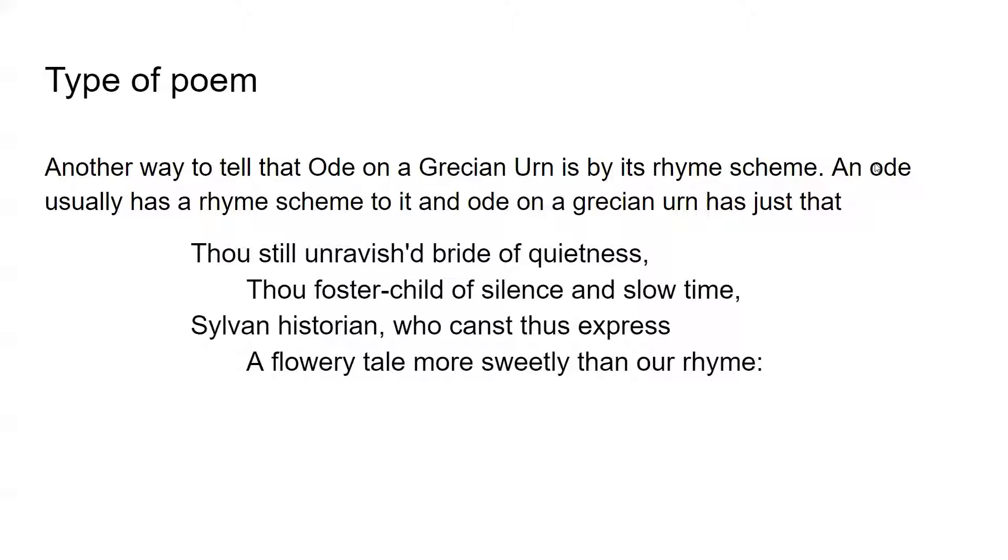Another way to tell that Ode on a Grecian urn is by its rhyme scheme. An ode usually has a rhyme scheme to it, and Ode on a Grecian urn has just that. For example, thou still unravished bride of quietness, thou foster child of silence and slow time, sylvan historian who canst thus express a flowery tale more sweetly than our rhyme. The rhyme scheme in this is A-B-A-B. The A, for example, would be quietness and express. B would be slow time and our rhyme.